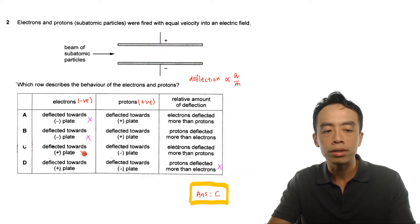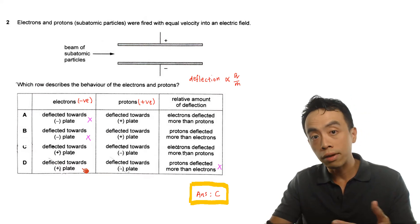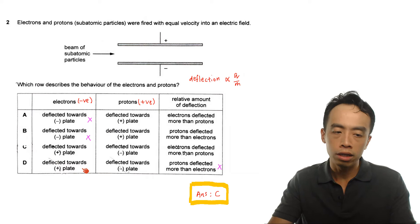Now of course if I look at protons, protons are positively charged, they will be deflected towards the negative plate and if I run through the options, options C and D will have to be the answer. So this is very simple.